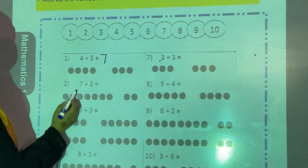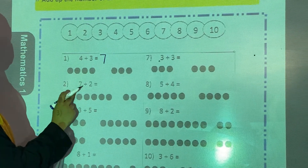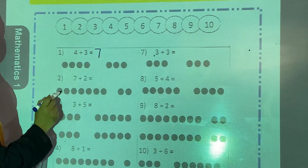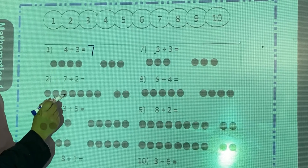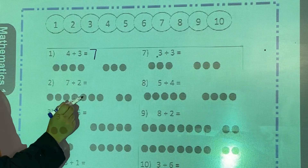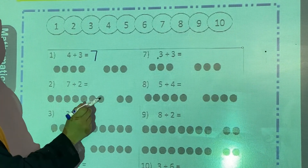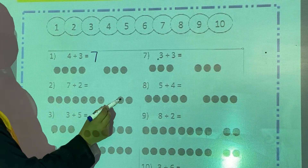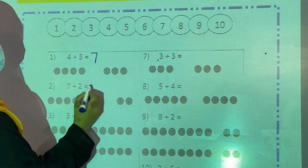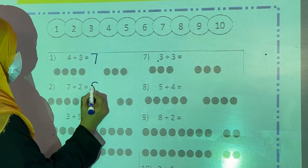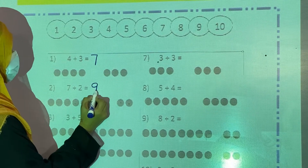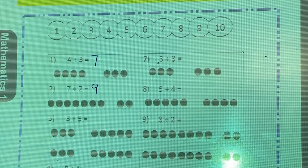Second one: 7 plus 2. Count: 1, 2, 3, 4, 5, 6, 7, 8, 9. So 7 plus 2 is equal to 9. Now 3 plus 5: count 1, 2, 3, 4, 5, 6, 7, 8. So 3 plus 5 is equal to 8.